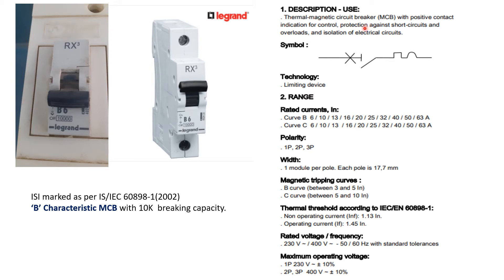Here in this description it is noted that thermal magnetic circuit breaker that is MCB with positive contact indication for control protection against short circuit and overload and isolation of electrical circuit. So this is what actual function which is carried out by this particular MCB.